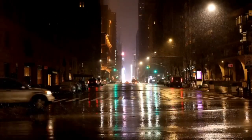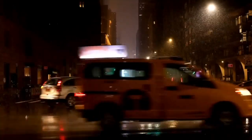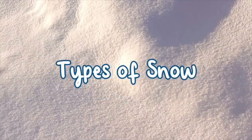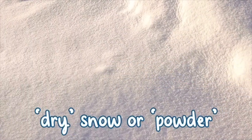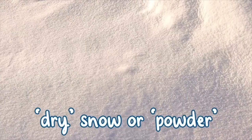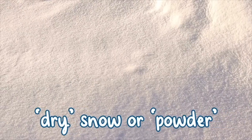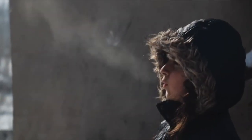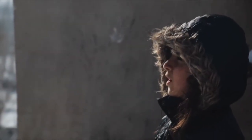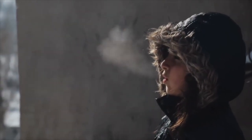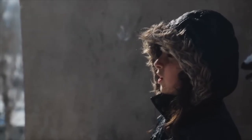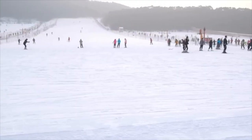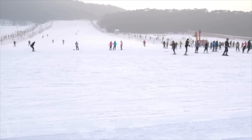Light and fluffy snow consists of small snowflakes and is known as dry snow or powder. This is formed when air temperatures are colder and there is less moisture in the air. Dry snow is ideal for winter snow sports but is more likely to drift in the wind.